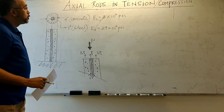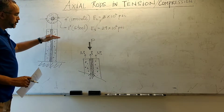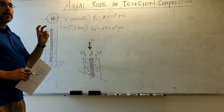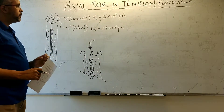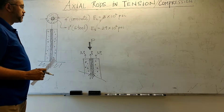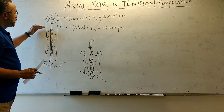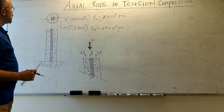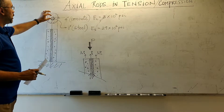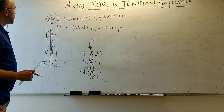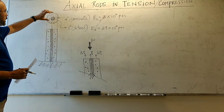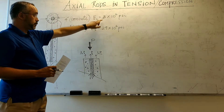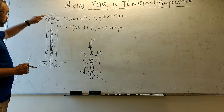We now turn our attention to axial rods in compression where two materials are acting in parallel, as opposed to our previous example where they were acting in series. In this case we have a circular concrete cross-section with a solid circular steel bar embedded inside, placed concentrically with the concrete. The cross-section has a 4-inch diameter concrete with an elastic modulus of 3×10⁶ psi.